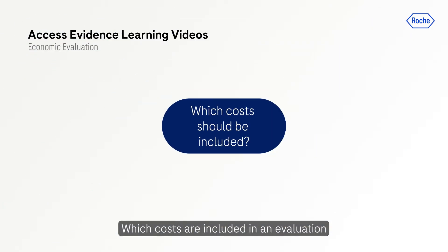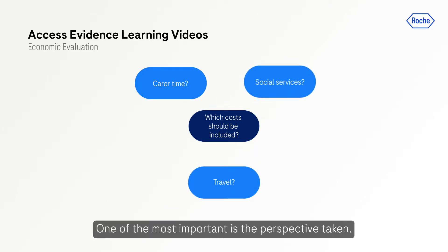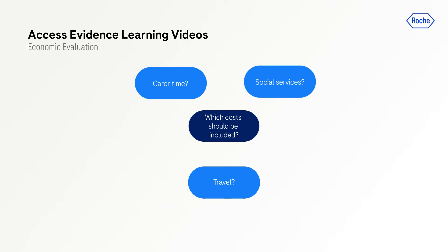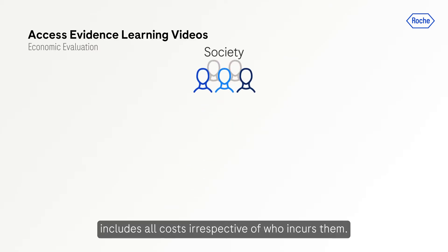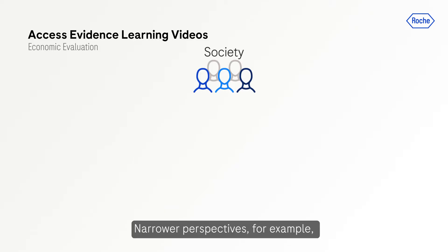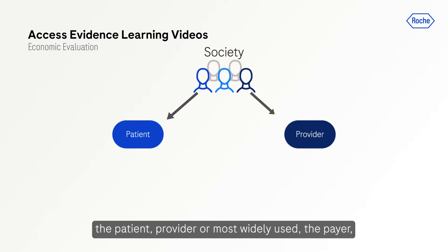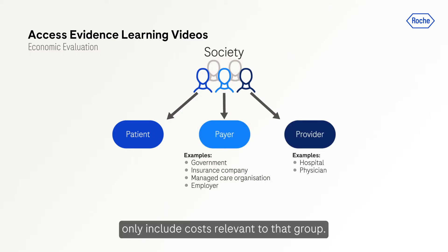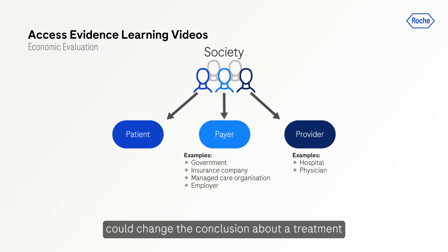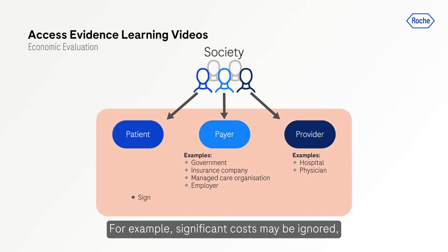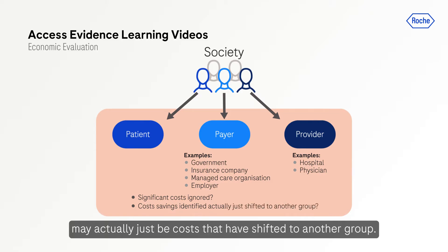Which costs are included in an evaluation is determined by various factors, one of the most important being the perspective taken. This depends on the purpose of the evaluation and who it is aimed at. Society is the broadest perspective and includes all costs irrespective of who incurs them, giving the most comprehensive assessment of an intervention. Narrower perspectives — for example, the patient, provider, or most widely used, the payer — only include costs relevant to that group. One needs to be cautious, as some excluded costs could change the conclusion: significant costs may be ignored, or cost savings identified may actually just be costs that have shifted to another group.